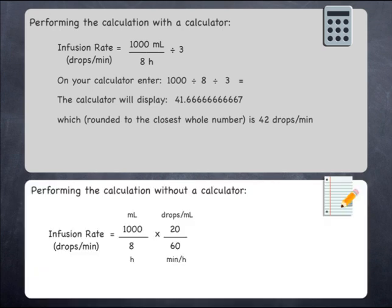To perform the calculation without a calculator, start by cancelling 1,000 over 8. This can be done by dividing both numbers by 8, giving 125 over 1. 20 over 60 will cancel by dividing both numbers by 20, giving 1 over 3.